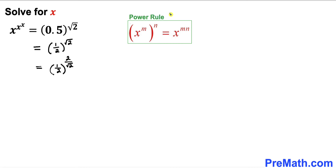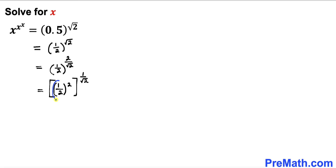Now let's recall the power rule: x to the power m, to the power n, can be written as x to the power m times n. Applying this rule on the right-hand side, we get (1/2) to the power 2, and then whole to the power (1 divided by square root of 2). And (1/2) to the power 2 is the same as 1/4, so the right-hand side becomes (1/4) to the power (1 divided by square root of 2).